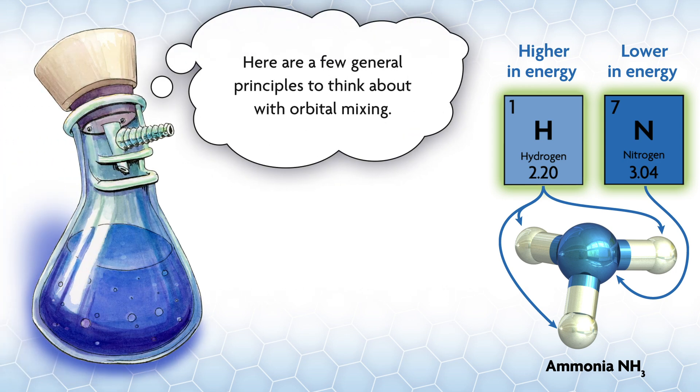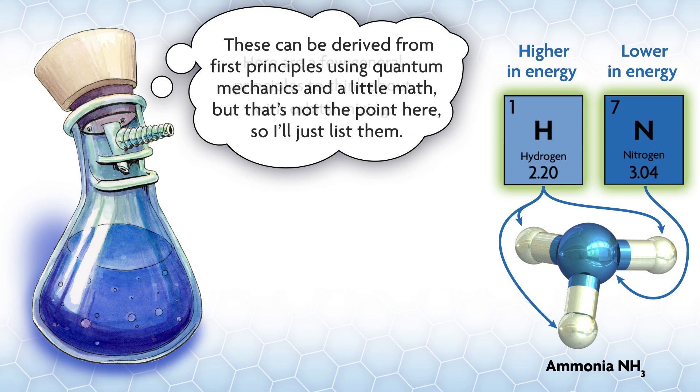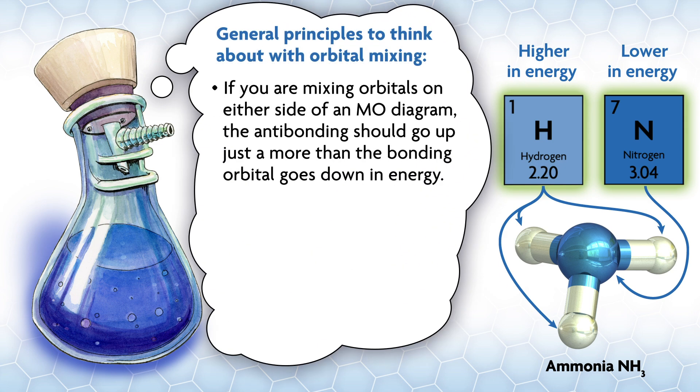Here are a few general principles to think about with orbital mixing. These can be derived from first principles using quantum mechanics and a little math, but that's not the point here, so I'll just list them. First, if you're mixing orbitals on either side of an MO diagram, the antibonding should go up just a little bit more than the bonding orbital goes down.